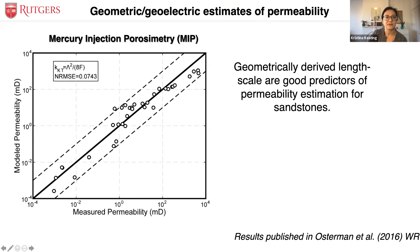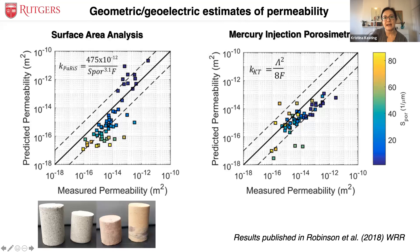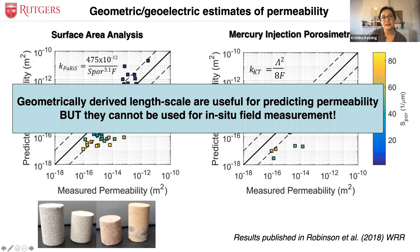We can look at the surface area from mercury injection porosimetry and get relatively good estimates — some outliers exist, but not perfectly within one order of magnitude. The problem with all these geometric and geoelectric estimates is that these geometrically derived length scales are pretty good at predicting permeability, but we can't use them in the field for in-situ measurements. This is why we start relying on NMR for these estimates.